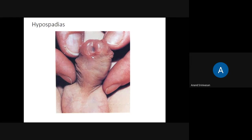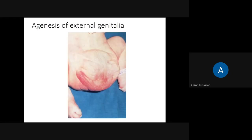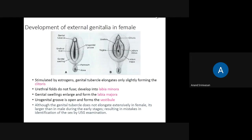In hypospadias, the urethra does not open at the external urethral meatus because re-canalization has not taken place and the urethral fold is not folded completely — the urethra opens on the ventral surface of the penis. This condition needs to be treated in infancy. Agenesis shows absence of sexual characters of the external genitalia.